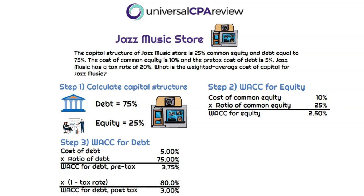Step three — the WAC for debt. The question tells us the cost of debt is 5%. Debt is usually cheaper than equity, so always keep that in mind. The cost of debt of 5% multiplied by the debt ratio of 75% gives us 3.75% before taxes. But we always have to factor in the tax rate: one minus the tax rate of 20% is 80%. So 3.75% times 80% means the WAC for debt after taxes is 3%.